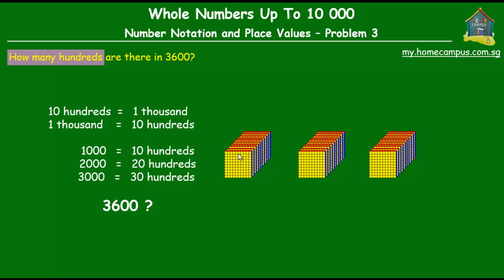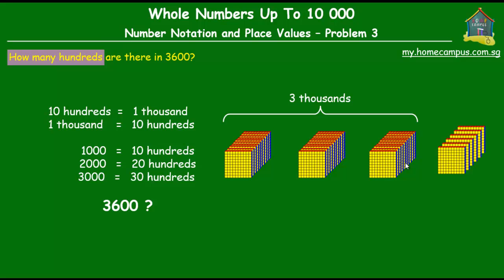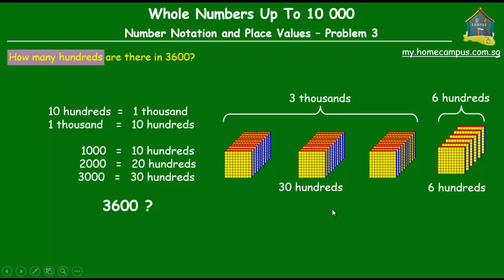Now what if we have three thousand and six hundred? The three blocks together represent three thousands, and we additionally have six hundreds, because the number given is 3600. So we have three thousands and six hundreds. The three thousands can be broken up into thirty hundreds.